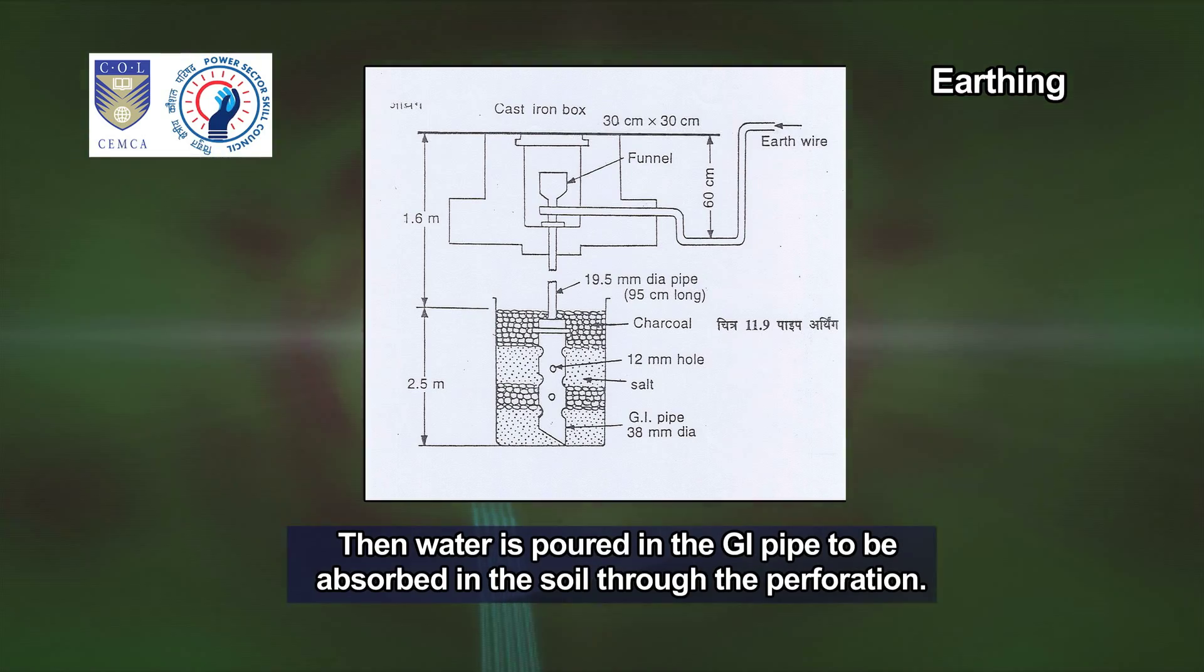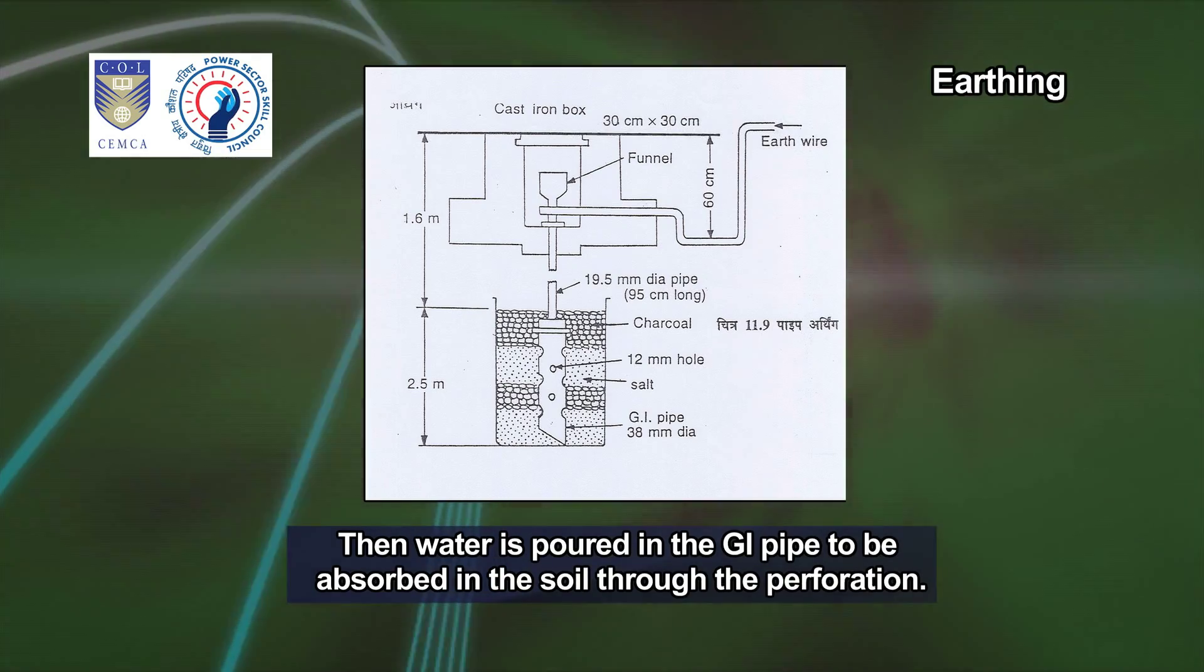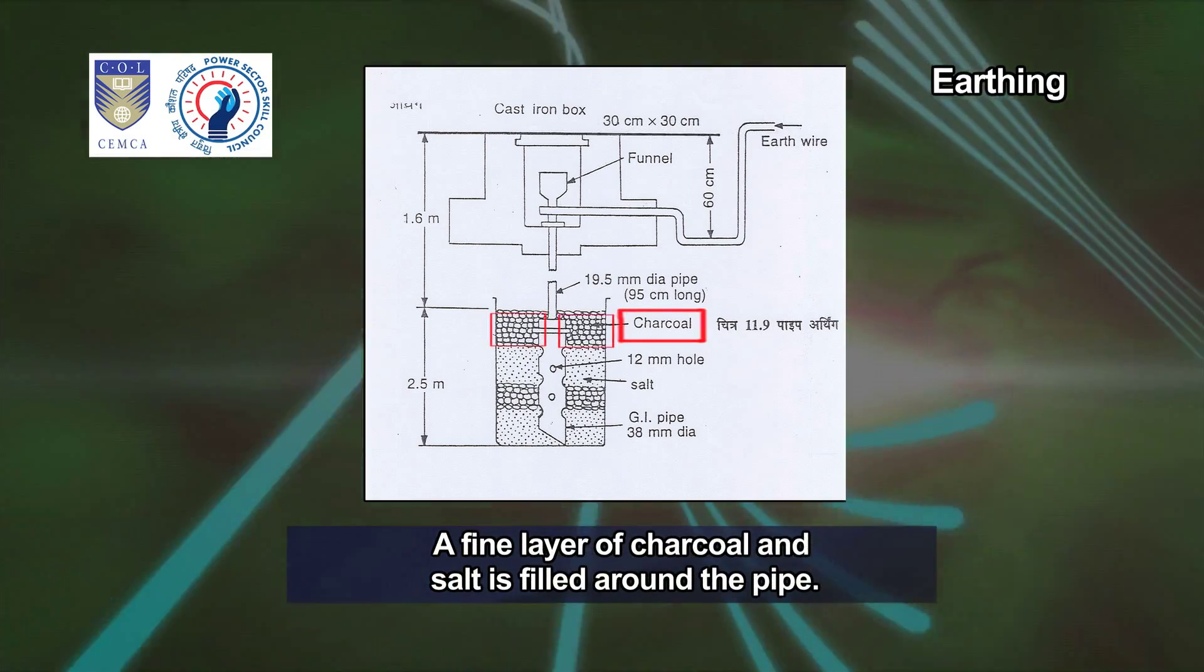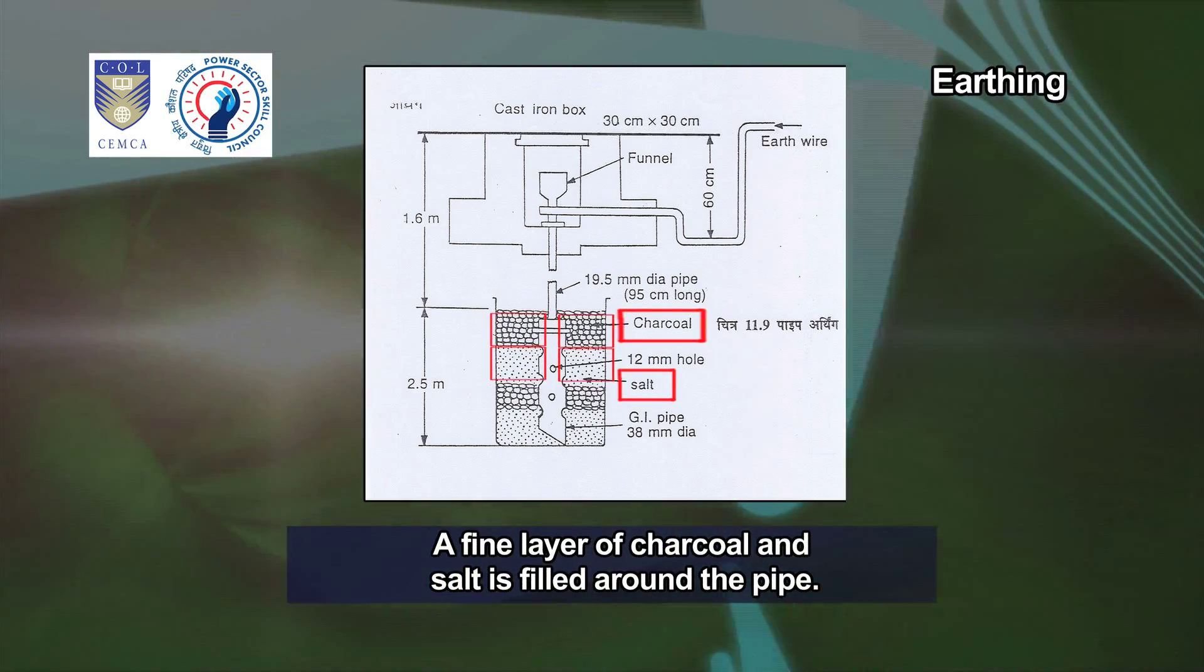Water is poured into the GI pipe to be absorbed in the soil through the perforations. A fine layer of charcoal and salt is filled around the pipe.